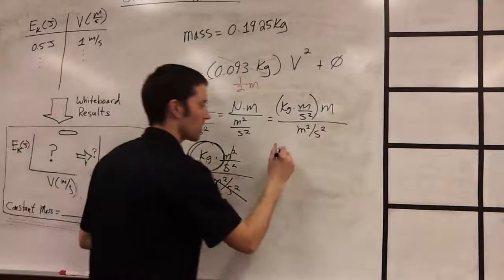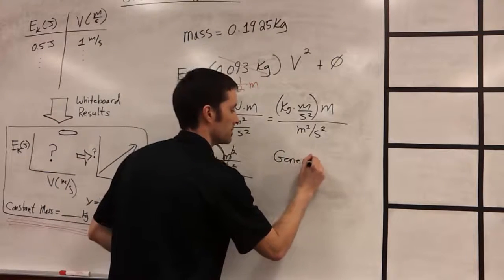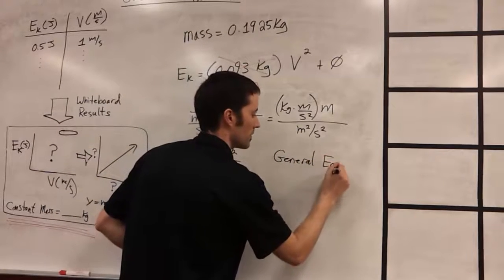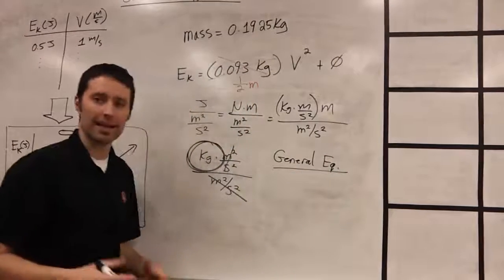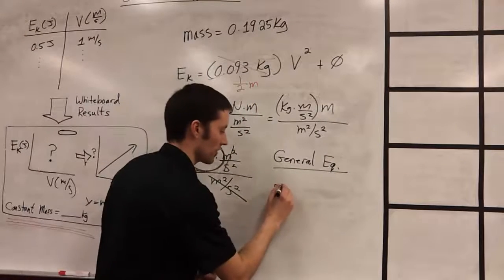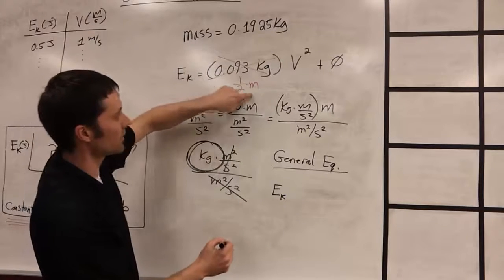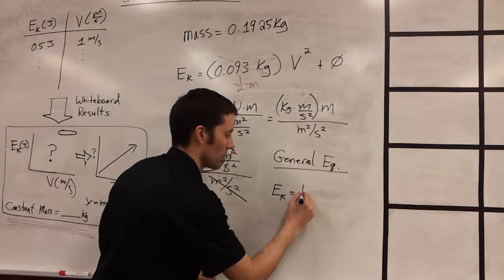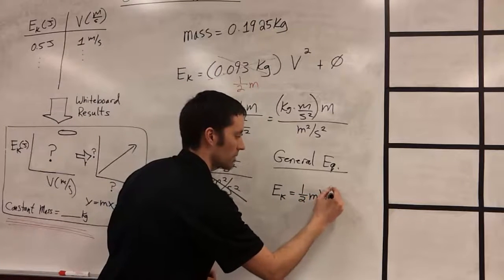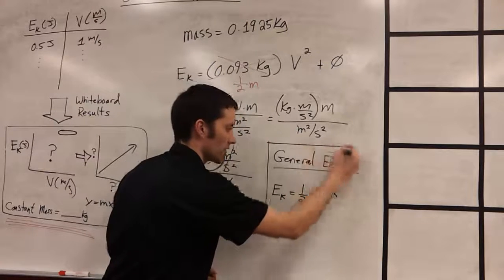So now our general equation becomes, for calculating the kinetic energy of any object, that the kinetic energy of any object is equal to one half the mass times velocity squared. So it's one half times the mass times velocity squared.